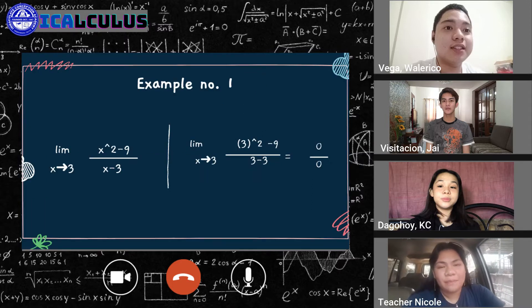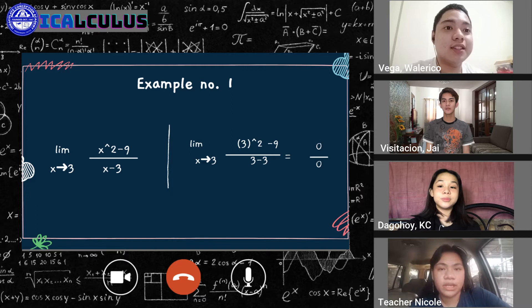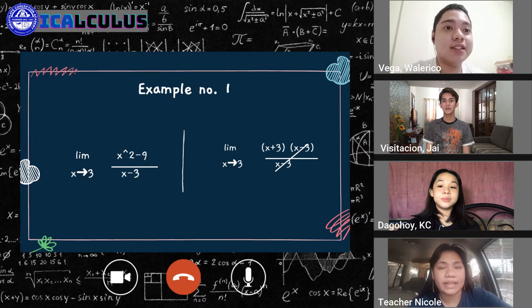For our first example, we have the limits of x squared minus 9 all over x minus 3 as x approaches 3. So if you may notice, when you directly substitute 3 in the given function, it will give us an indeterminate number of 0 over 0.